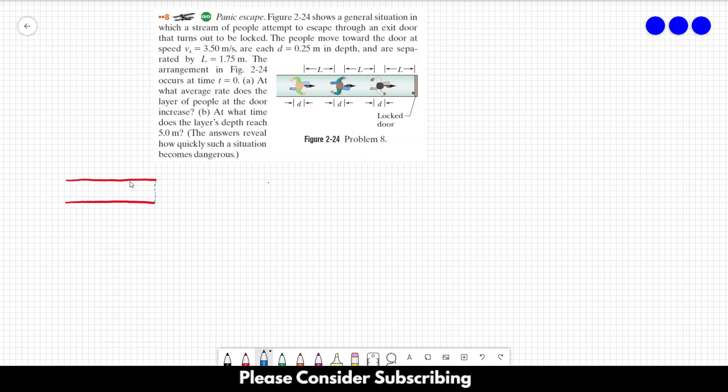This is the first person over here represented by this blue line. This is the second person and this is the third person.